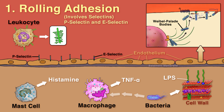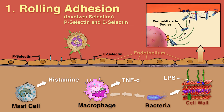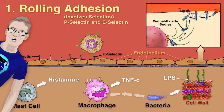These selectins recognize the sulfated sialyl-Lewis-X moiety of certain leukocyte glycoproteins. P-selectin and E-selectin interact with these glycoproteins, allowing leukocytes to adhere reversibly to the vessel wall so they can roll along the endothelium. Without this initial weak adhesion, the stronger adhesion in the next step of extravasation cannot happen.